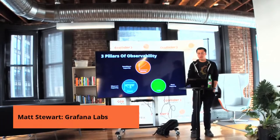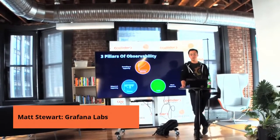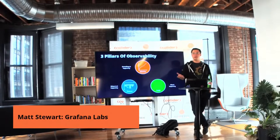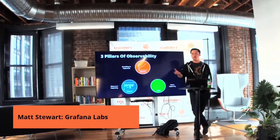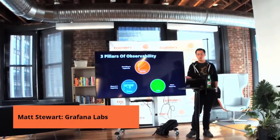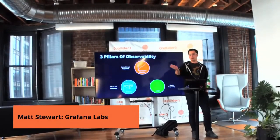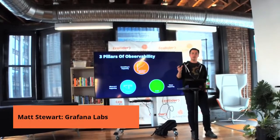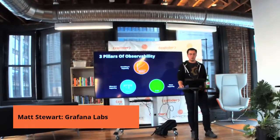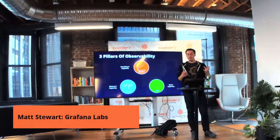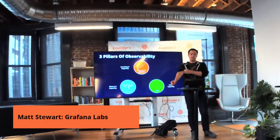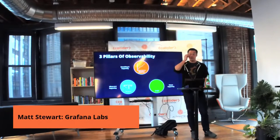The three pillars of observability: metrics, logs, and traces. Metrics are telling us that something is happening — maybe our CPU or memory has gone up to 100%. Logs are telling us hopefully what's happening if we've developed our code properly — an error, X, Y, or Z. And traces show us where it's happening — there's a slow database call here, whatever it might be. Independently, you'll find tooling in the market for each one of these in isolation, and truthfully no company really does all three things really, really well.